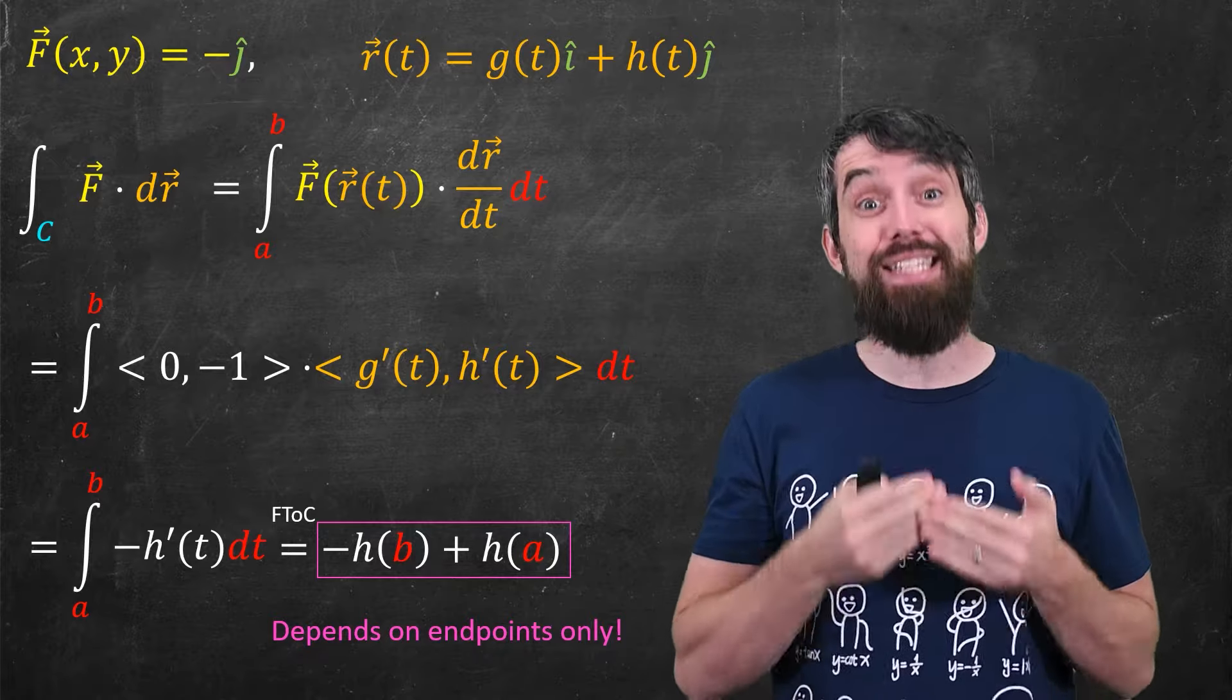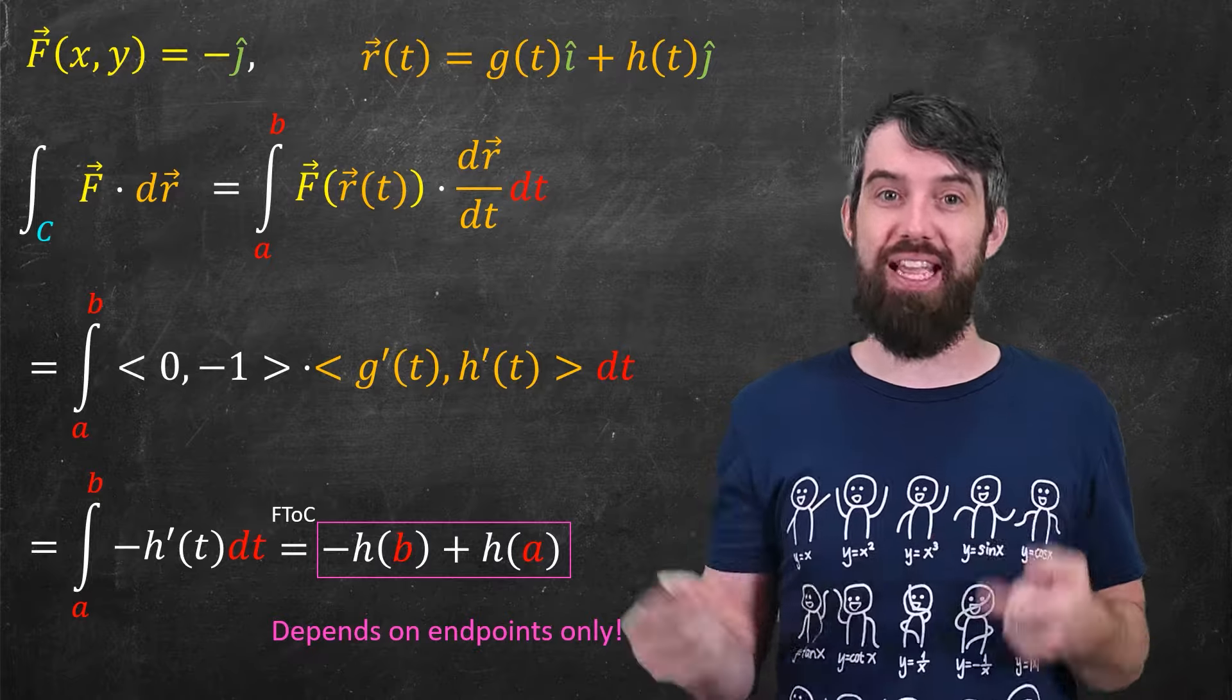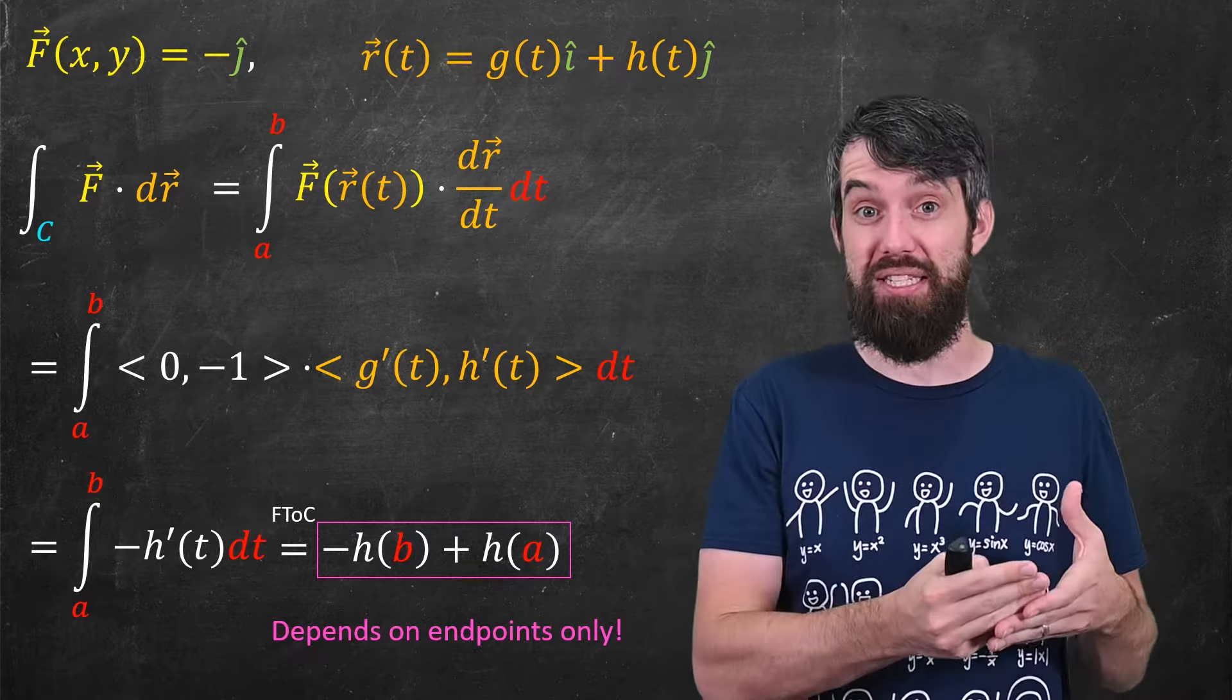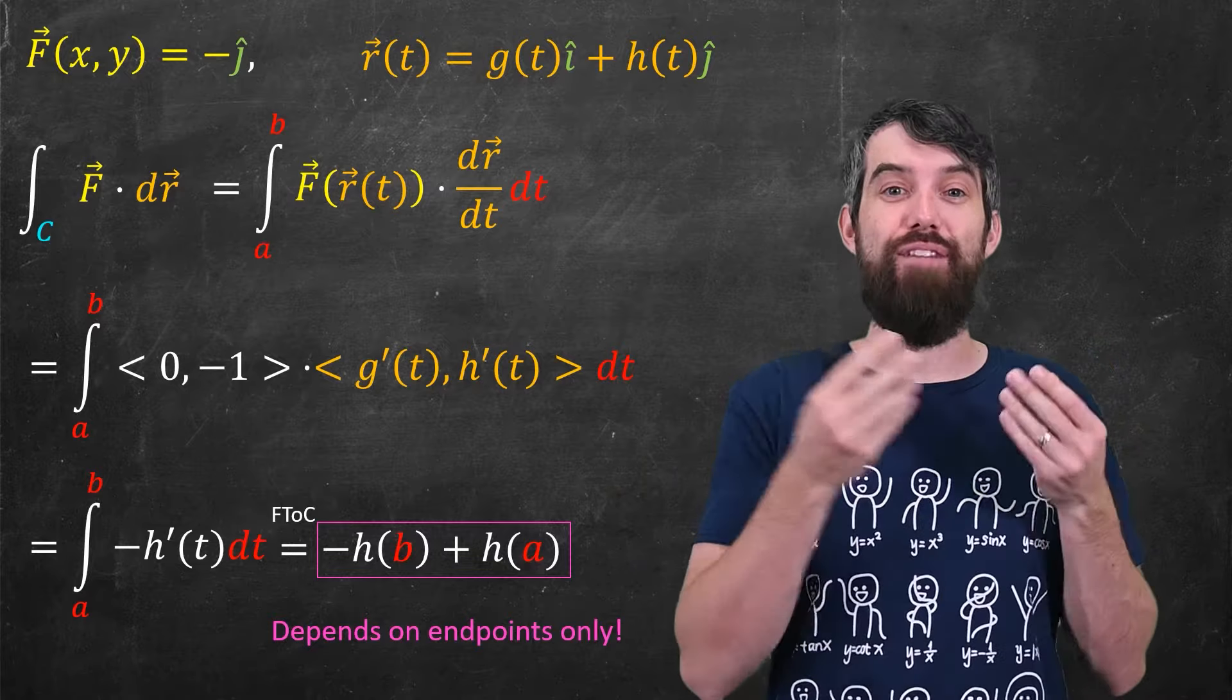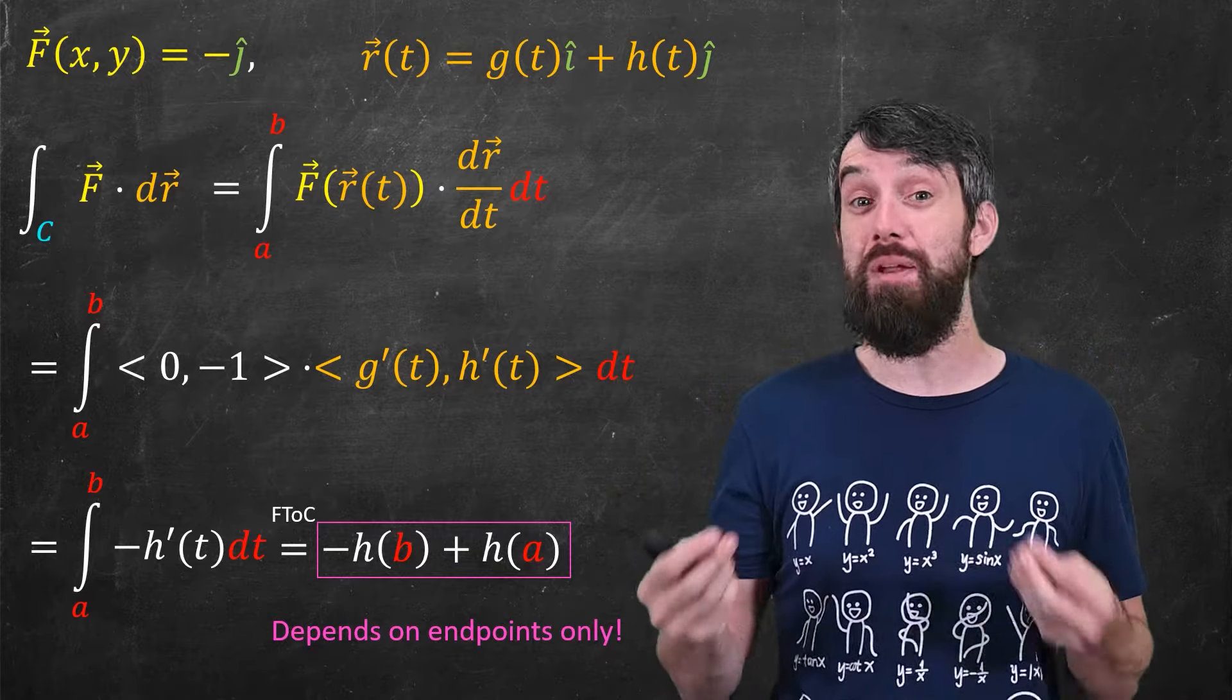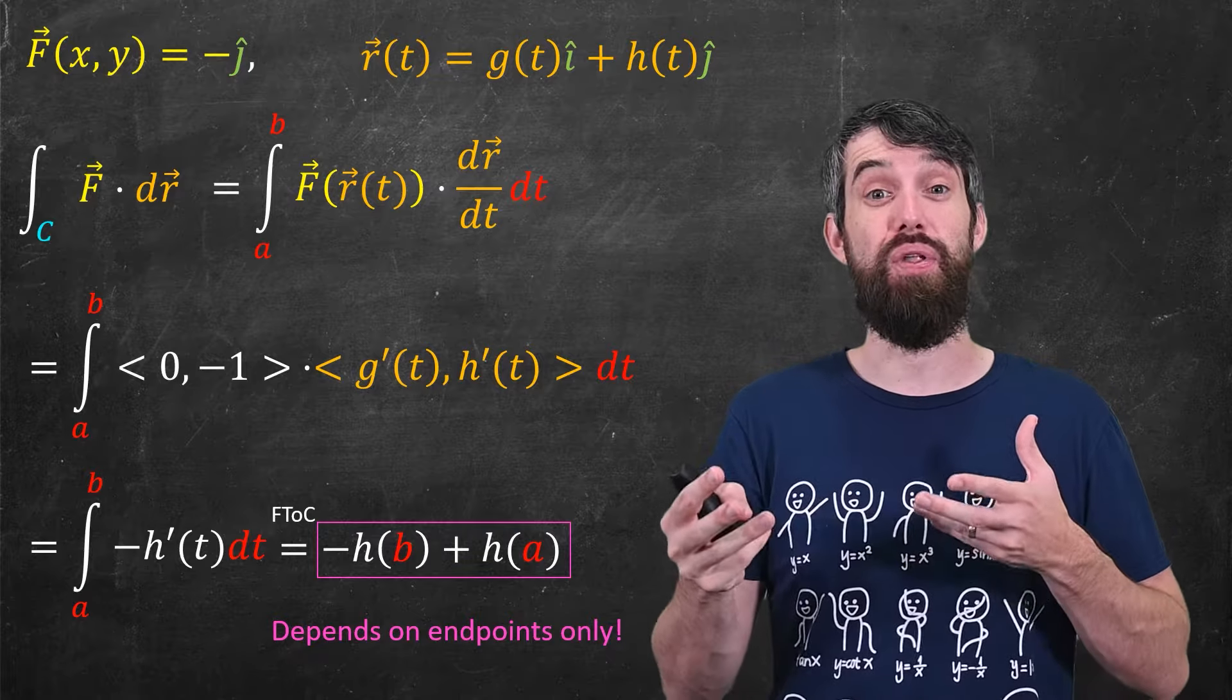And so this is showing that this field is indeed conservative because it doesn't matter what the g of t and h of t is, as long as they have the same endpoints. If they have the same endpoints, then this line integral evaluates to something that only depends on those endpoints. It doesn't matter how it gets there in the middle. This field is conservative.